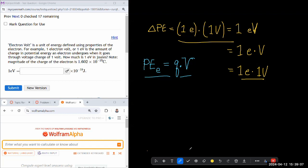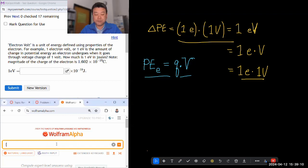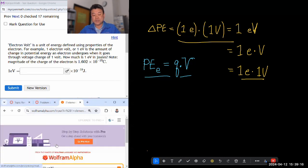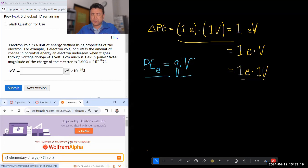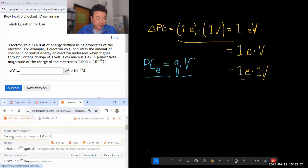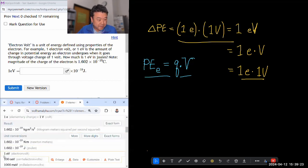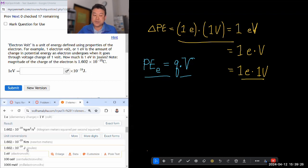So all we have to do to answer this question is calculate 1 EV in SI unit. And this is where Wolfram Alpha is super helpful. I can just type in what I want to calculate: 1 elementary charge times 1 volt. And it will give me a bunch of answers. One of them will be 1 EV. And another of the answers will be in joules, the basic SI unit of energy. So it's going to be 1.602 times 10 to the minus 19.